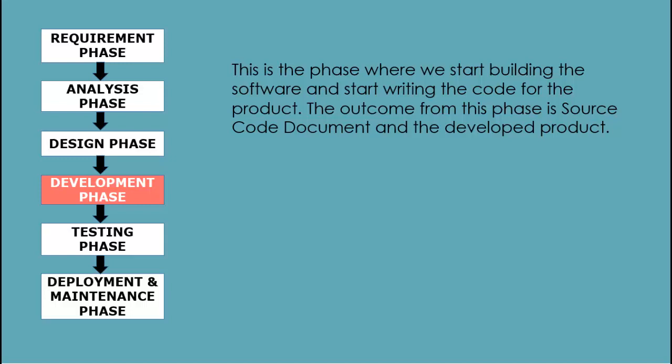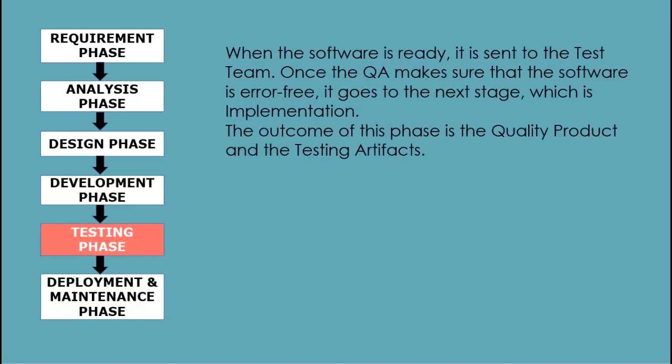Testing phase: when the software is ready it is sent to the testing department, where the test team tests it thoroughly. They either test the software manually or using automated testing tools, depending on the process defined in STLC, and ensure that each and every component of the software works fine. Check out our video on STLC and its phases for a clear understanding of the software testing lifecycle. Once the QA team makes sure that the software is error free, it goes to the next stage which is implementation. The outcome of this phase is the quality product and the testing artifacts. Check out our video on test deliverables, where we have discussed the list of test artifacts we deliver.